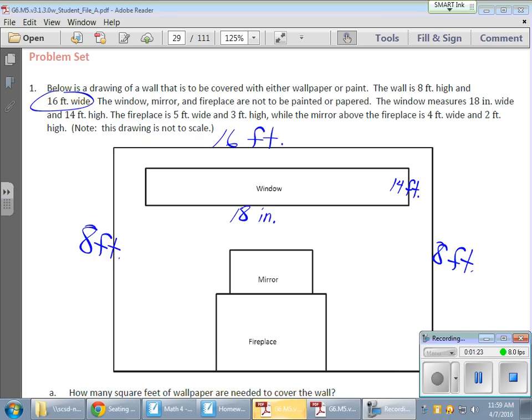Boy, this is certainly not drawn to scale—18 inches and 14 feet. The fireplace is five feet wide, and three feet high, so that's three feet over here. The mirror is four feet wide, so that's four feet right there, and two feet high. Yes, it's not drawn to scale; that's obviously the case.